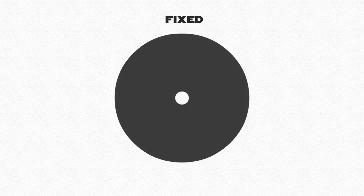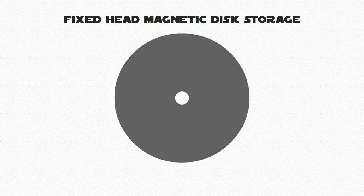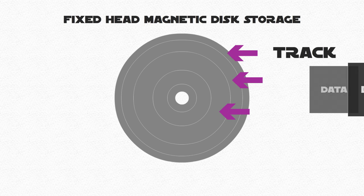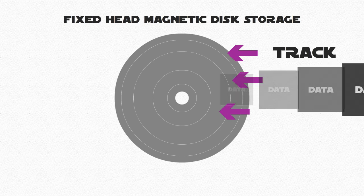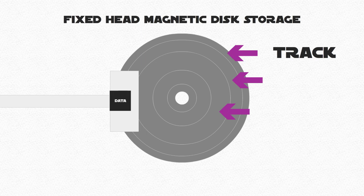The size of a large CD. A fixed head magnetic disk storage is covered with magnetic film. It is then formatted into concentric circles, and each of these circles is known as a track. Data is recorded onto each track by a fixed read and write head that is positioned over it.